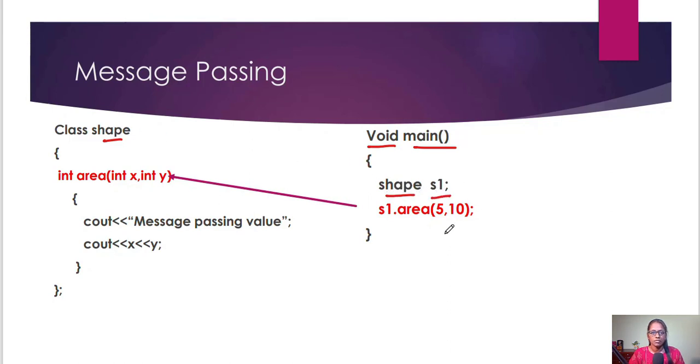And then in the main function you are creating the object shape s1, and this is s1.area, you are calling this function. s1.area and then passing this five value to x, this five value to x.